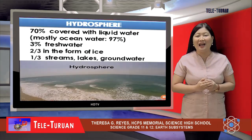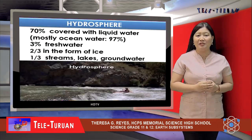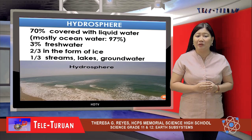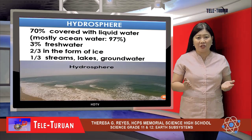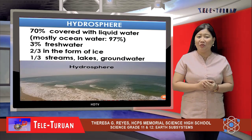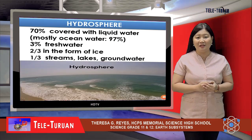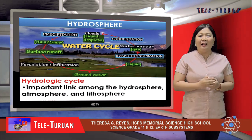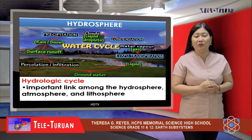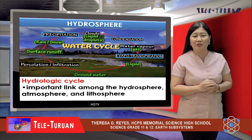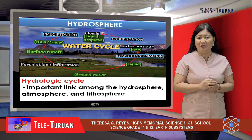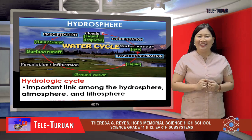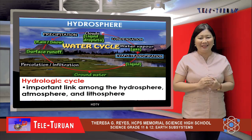The next subsystem is the hydrosphere. About 70% of the Earth is covered with liquid water, and much of it is in the form of ocean water. Only 3% of the Earth's water is fresh — two-thirds are in the form of ice, and the remaining one-third is present in streams, lakes, and groundwater. Through the hydrologic cycle or water cycle, there is a constant exchange of heat and moisture between the atmosphere and hydrosphere, and it contributes to the reshaping of Earth's surface through the processes of weathering and erosion. Therefore, it is an important link among the hydrosphere, atmosphere, and lithosphere.